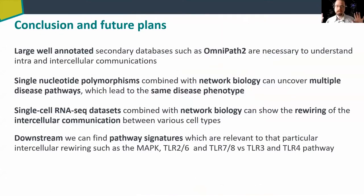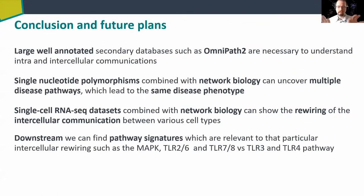In conclusion, we need these large secondary and tertiary databases such as Omnipath to understand intra- and intercellular communications. I have shown how we can use network biology and single nucleotide polymorphisms to uncover multiple disease pathways. Single-cell RNA-seq data combined with network biology can produce cell-specific data, show how intercellular communications are rewired in disease, and reveal specific pathway signatures for whether conditions are healthy or inflamed.